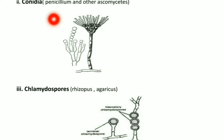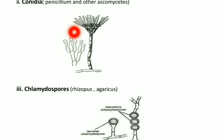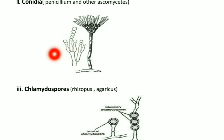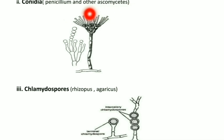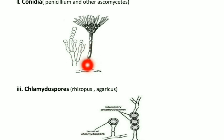Conidia are non-motile spores, produced singly or in chains at the tip of special hyphal branches called conidiophores. These are produced exogenously with no covering, seen in Penicillium and Ascomycetes.